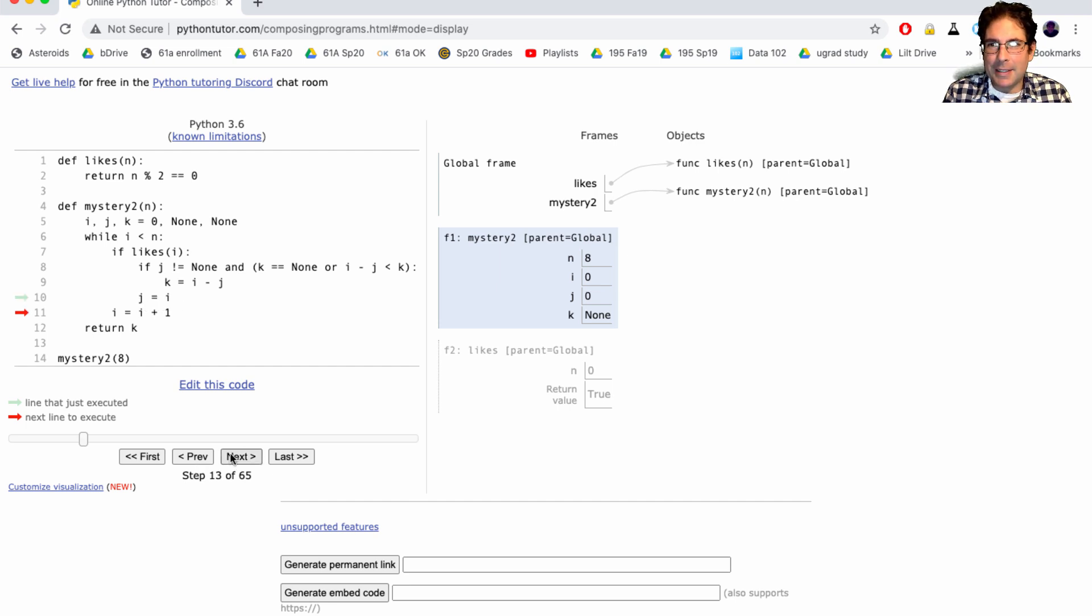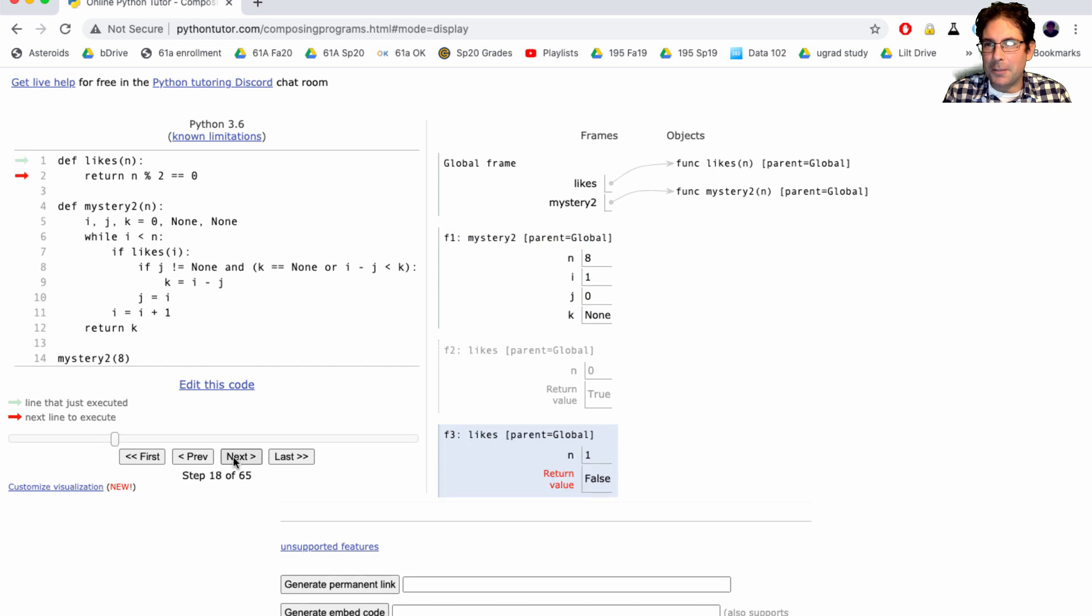Nothing happened to k yet. It seems like you can only change k after you have a value for j. Okay so let's go a little bit longer and see when's the first time that we actually get to this long line.